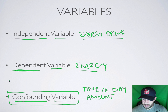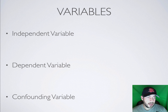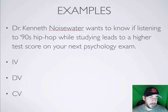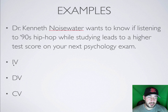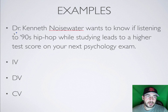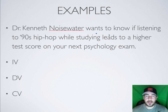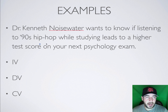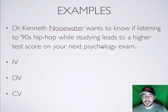Let's go through some more examples — this should be making more sense now. We're going to have three examples and try to figure out what the independent, dependent, and confounding variables might be. Dr. Kenneth Noyeswater wants to know if listening to 90s hip hop while studying leads to a higher test score on your next psych exam.